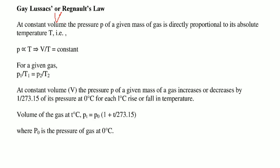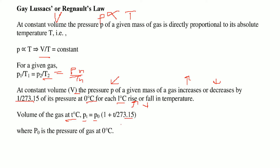At constant volume, the pressure of a given mass of gas is directly proportional to the temperature. This is Gay-Lussac's law: P is directly proportional to T, so P₁/T₁ = P₂/T₂ = Pₙ/Tₙ. The pressure increases or decreases by 1/273.15 of its pressure at 0°C for each 1°C rise or fall in temperature, giving Pt = P₀(1 + T/273.15), where P₀ is the pressure at 0°C.